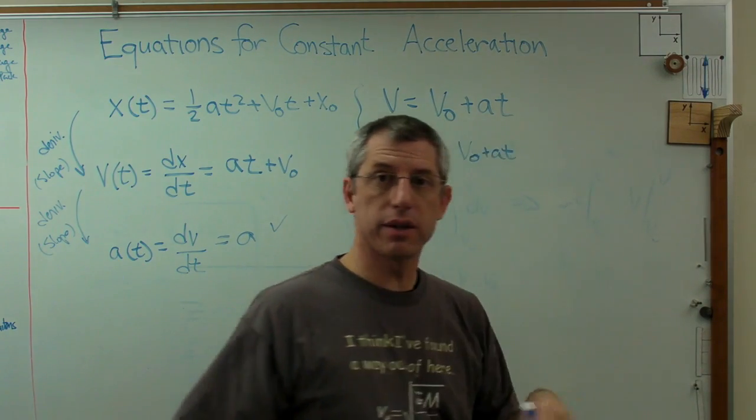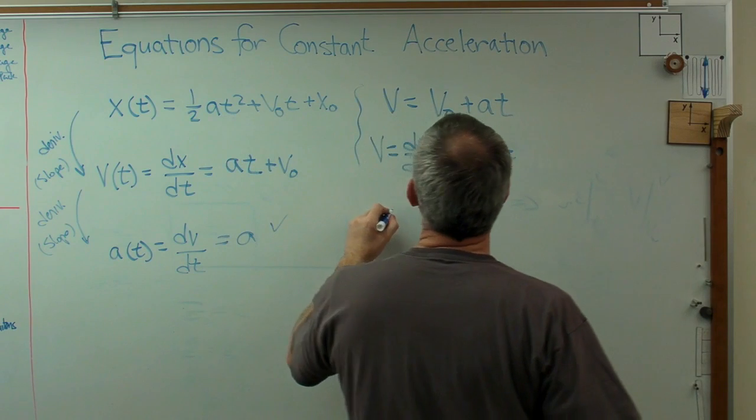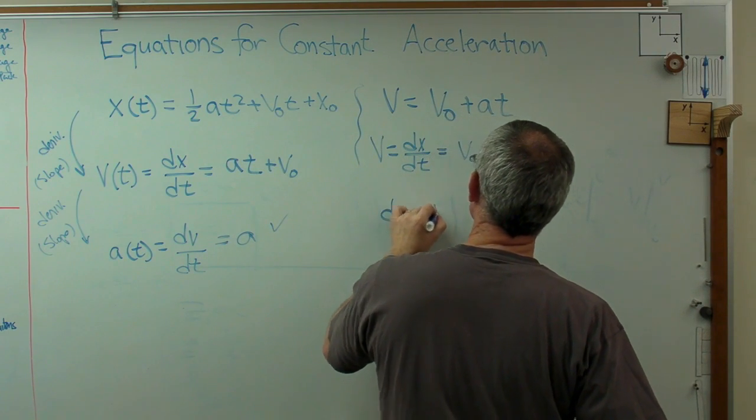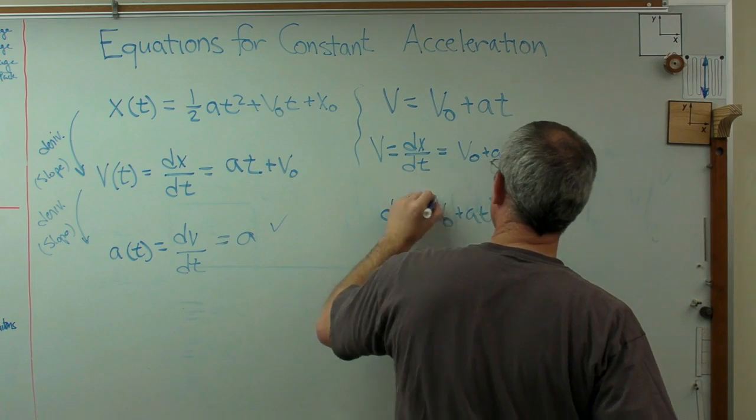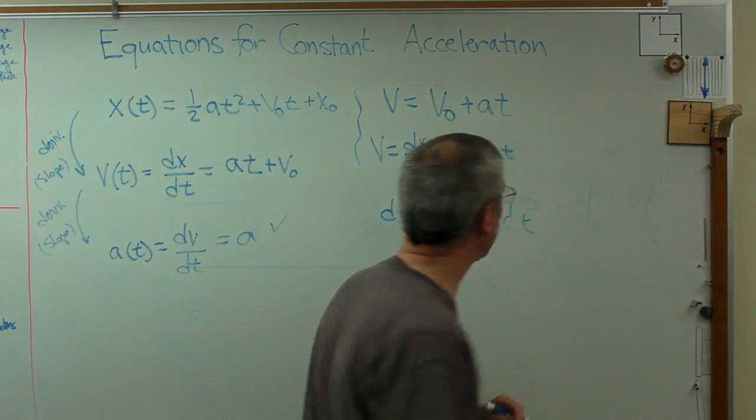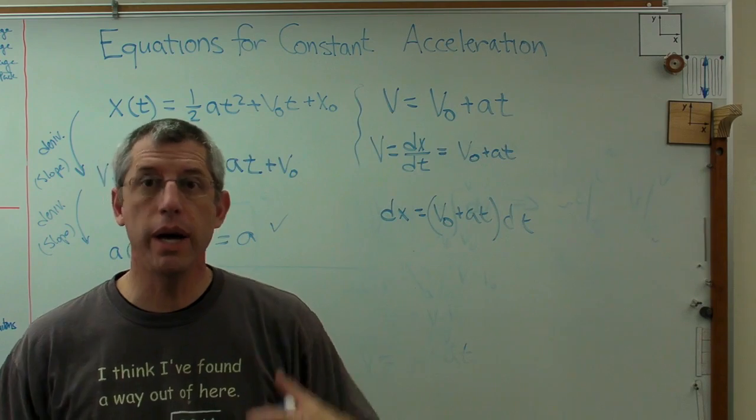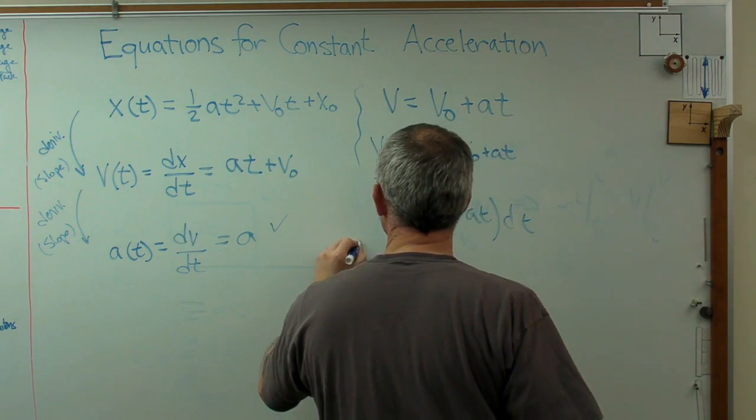Well, let's do that exact same thing again. Let's multiply through by dt. I'll say dx equals v0 plus at dt. How do we make it go away? Same way we did last time. So let's do this.